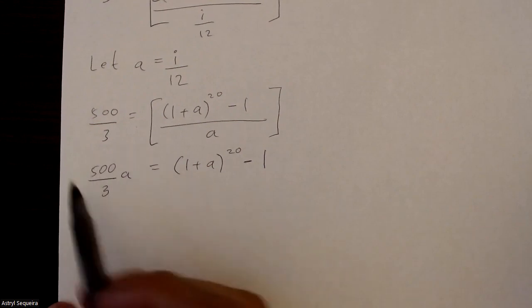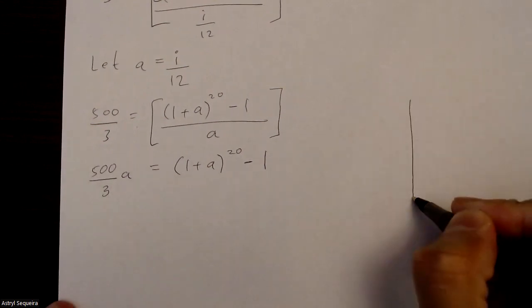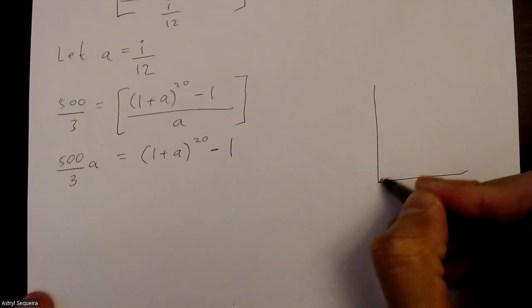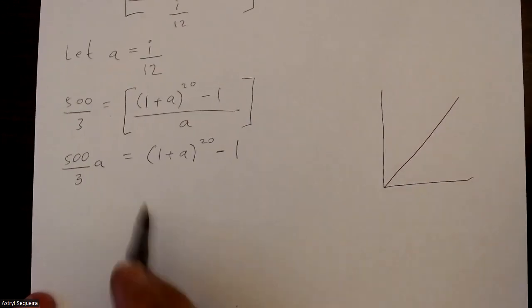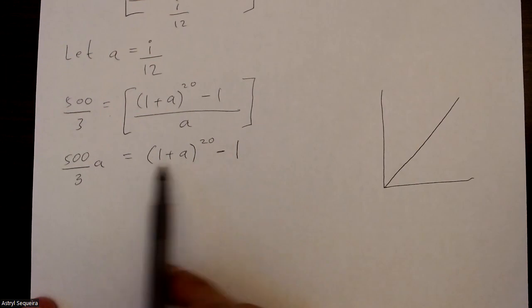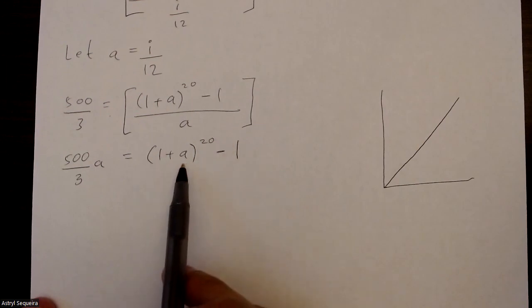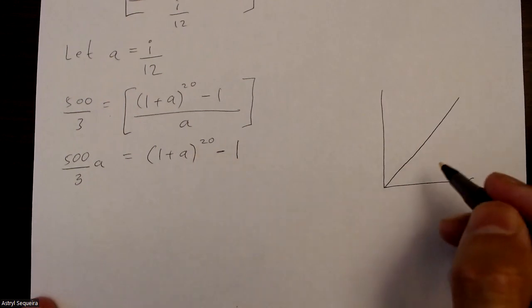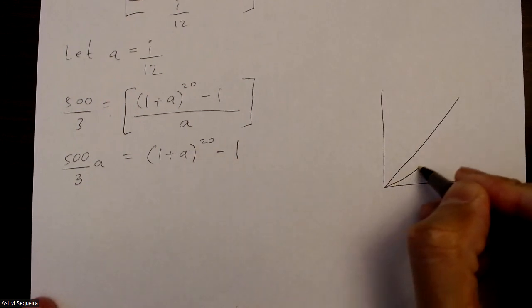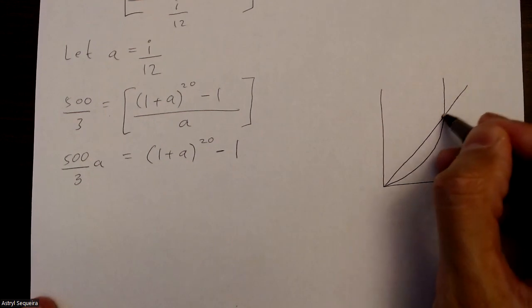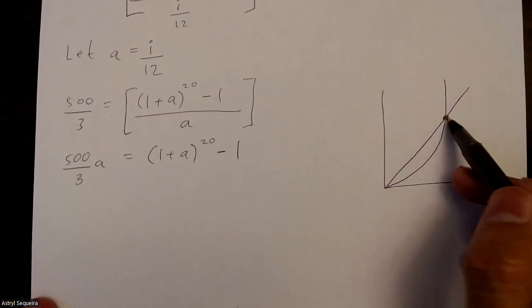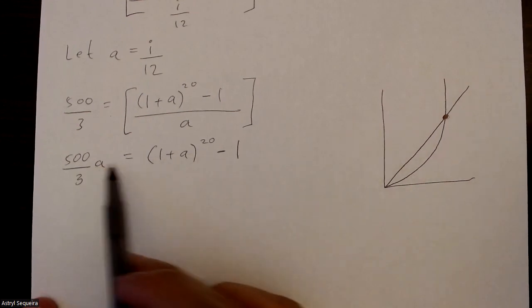What we do know is that this is a linear equation, positive slope and a y-intercept of 0. Just looks like that. And this is an exponential equation. So it's going to look something like this. And there is going to be an intersection point eventually. And this intersection point is basically the solution for a.